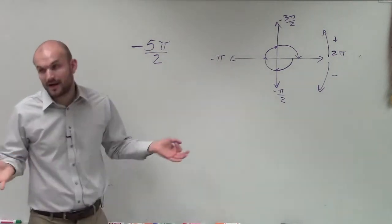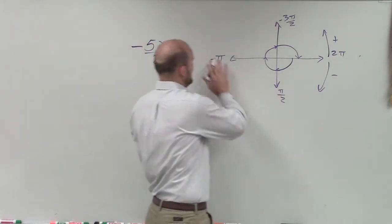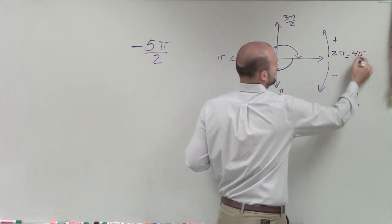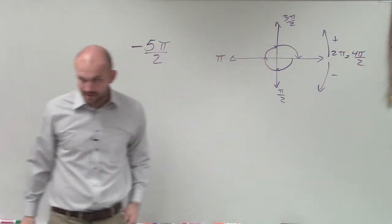Or negative 4π over 2, as you can write it. And really it's not negative, because that's just the direction, but that's equal to 4π over 2. You understand that?